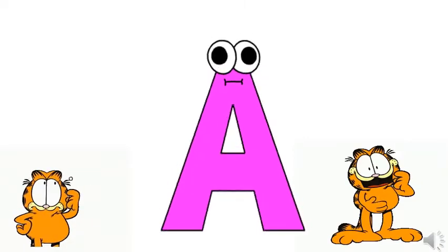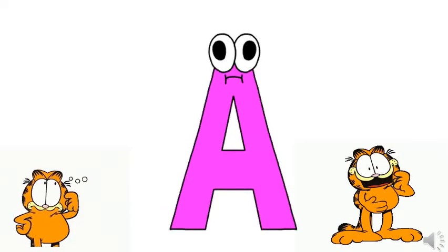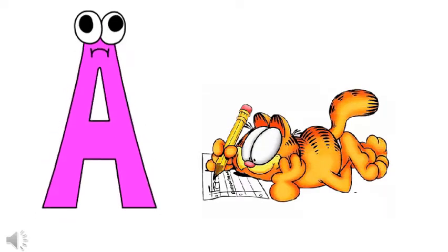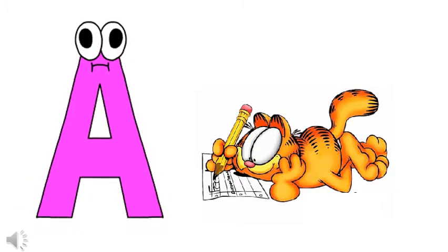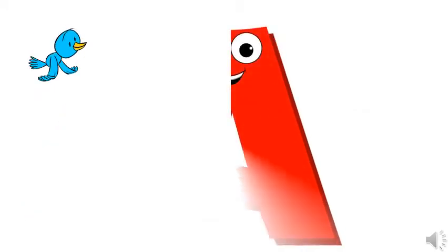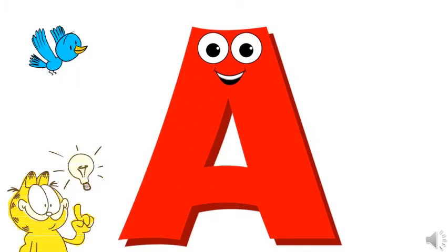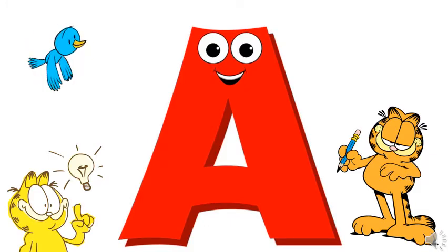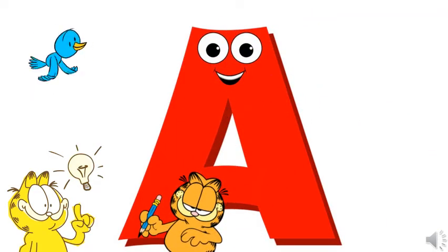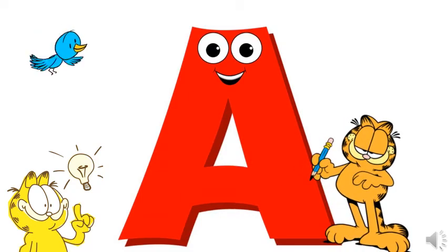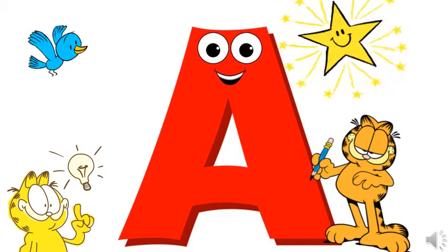Do you know what letter is this? Excellent! This is the capital letter A. Okay kids, are you ready to learn how to write the capital letter A? That's great! Okay, let's start! Can you get a paper and a pencil to write with me? Now let's start — how to write the capital letter A. First, line down. Second, line down again. And then, a slipping line. Did you do it? Great job!